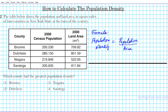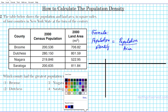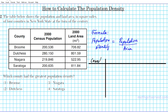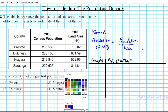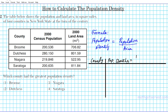Let's set up a table so our work is nicely organized. In the first column we'll place the location or county name, and in the second column we'll calculate the population density as the quotient of population divided by area.